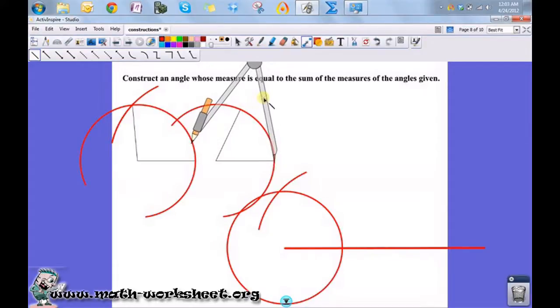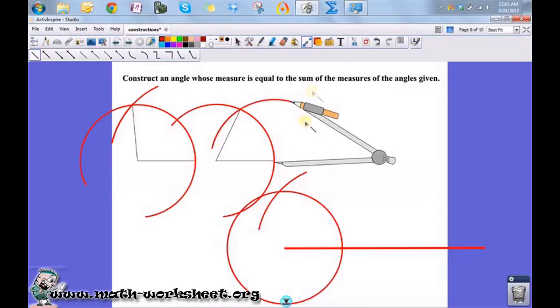Okay, so now I'm going to go and measure this distance here between the two points where the arc intersects this angle. Okay, and I'm going to just draw an arc to make sure it does, in fact, intersect, and it does.